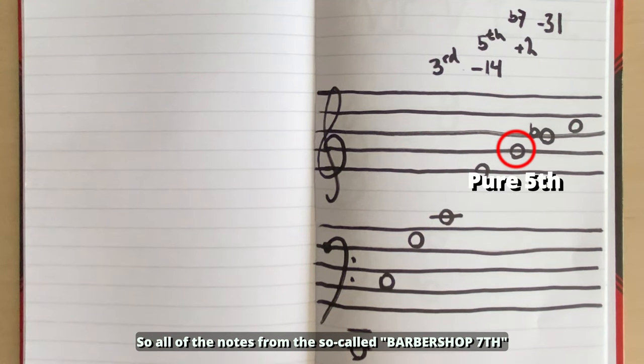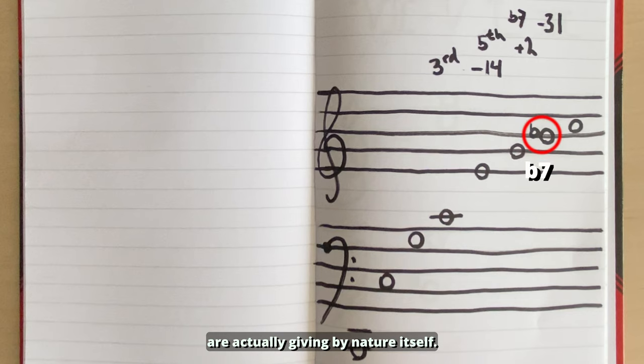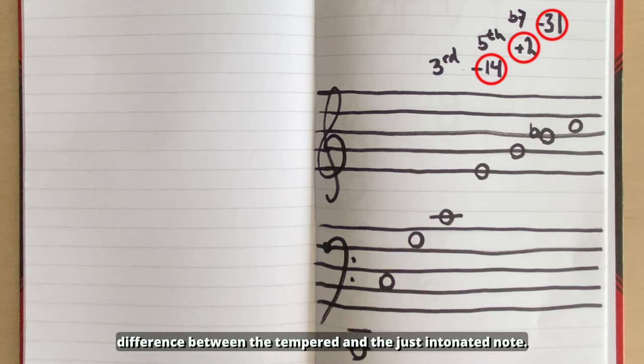So all of the notes from the so-called barbershop seventh are actually given by nature itself. The different numbers above the notes represent the difference between the tempered and the just intonated note.